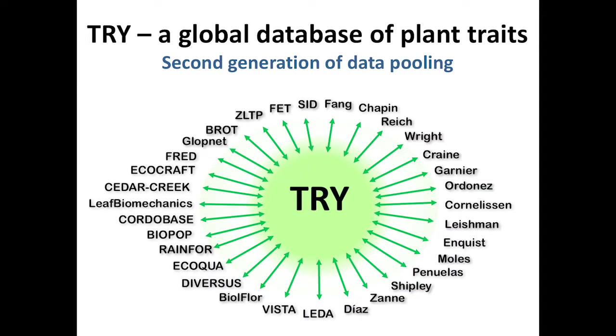In 2007 we started with a goal to develop a global database of plant traits, to make the data available for trait-based approaches in ecology and vegetation modeling. TRY is basically a second generation of data pooling because there have been large databases before, pooled from smaller experiments and datasets like GlobNet. Many of those were integrated into TRY, but with time also many direct, not pre-compiled databases made it into TRY.